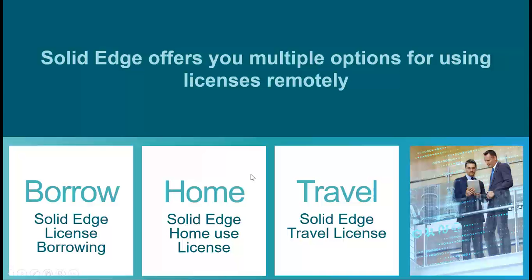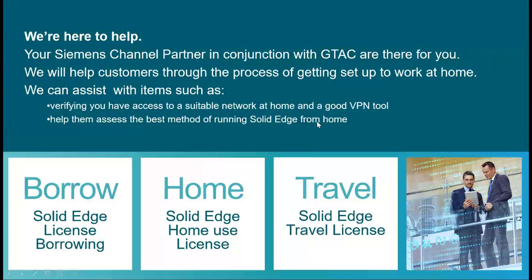A home use license is intended for a person who's using a production license at work to be able to load Solid Edge on a machine at home and have a license to do that. The travel license is an additional 30 days of licensing that you can take on your machine to travel or work from home — that starts January 1st and tracks how many days you're doing that. Your channel partner and Siemens is behind you helping you work from home.